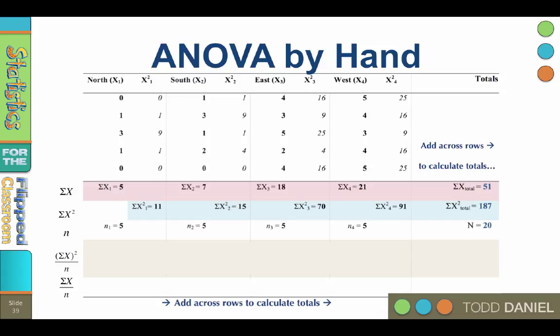For the next step, we square each sum of x in the red row, and divide by n in the white row. This is the sum of x quantity squared divided by n, and it represents a variance number. Do this separately for each group. Now this is a number that we're going to use in the next step to calculate variance. So we might as well call it what my mentor Doc Fox called it, variance units.